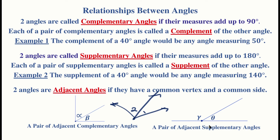Similarly, two angles that are adjacent and also form a straight angle of 180° are called adjacent supplementary angles. So angles theta and gamma here — they're not only adjacent, they're also supplementary, forming a pair of adjacent supplementary angles.